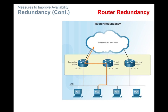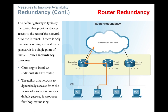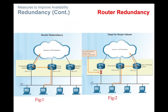As shown in the next diagram, if there is a link failure, the standby router becomes active and acts as the new forwarding router. The ability of a network to dynamically recover from the failure of a device acting as a default gateway is known as first hop redundancy.